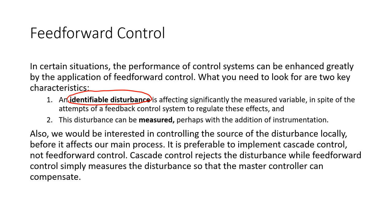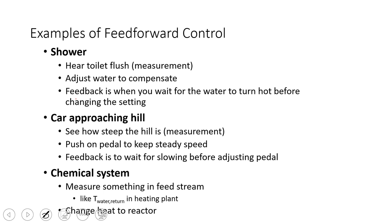We also want to be able to control the source of the disturbance locally before it affects the main process. We might consider a cascade controller instead if we have the same final control element that is able to control that disturbance and the process. Cascade control is preferable if we have the right scenario, but we can use a feed-forward controller if it isn't.